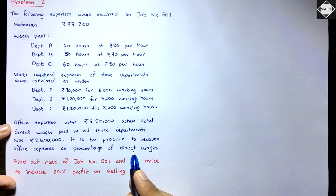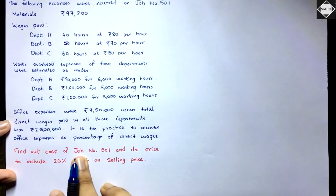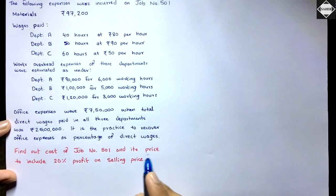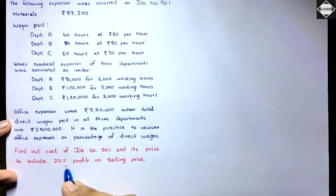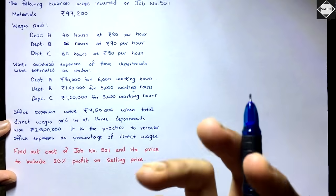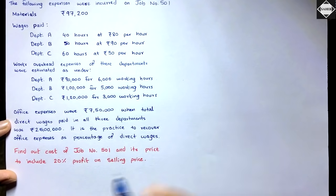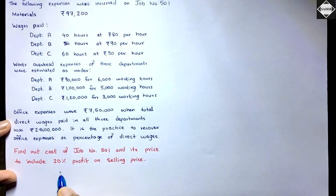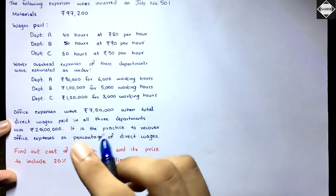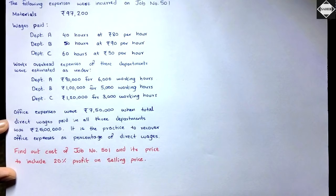We need to find the cost of job number 501 and its price to include 20% profit on selling price. We prepare a job cost sheet, calculate the total cost, and then the selling price. The profit percentage is given as 20% on selling price — we have to convert this: 20/80 will convert it into a percentage on cost price.